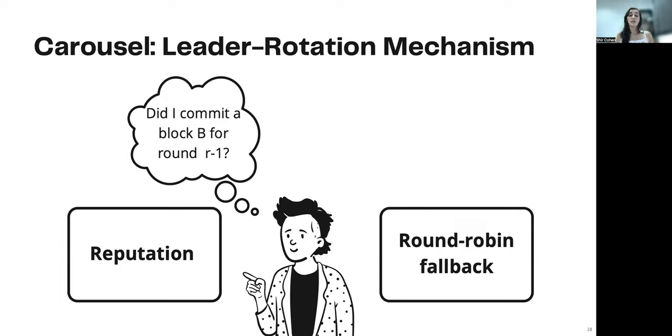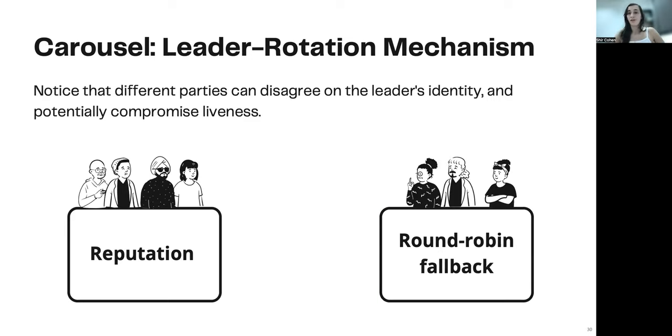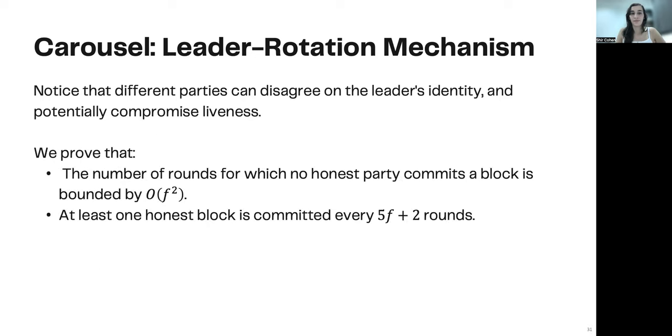What happens if a party did not commit a block for round R minus 1? Which can always happen, right? Because if we have a Byzantine leader, it may not create any block. So in that case, an honest party will use a round robin fallback and will elect the leader for the next round using round robin. However, we face a challenge here, because some parties may choose leaders using reputation, and some may choose them using round robin. This potentially compromises the liveness of our state machine replication. However, we managed to prove in the paper that the number of rounds for which no honest party commits a block is bounded by order of f squared. And we prove that at least one honest block is committed every 5f plus 2 rounds. While the algorithm seems relatively simple, the proof is far from being trivial.